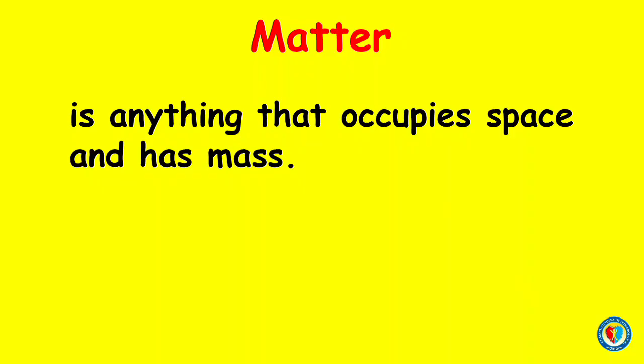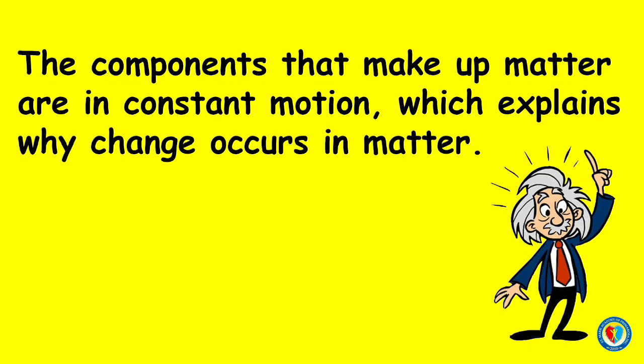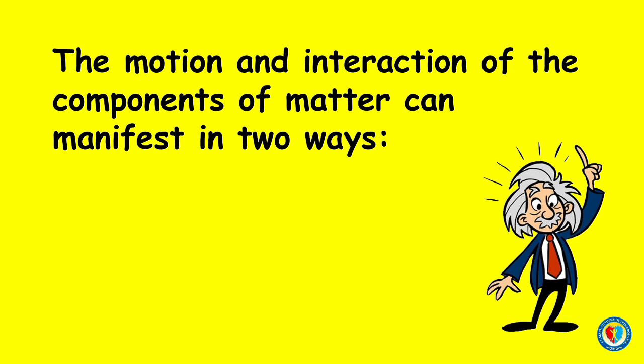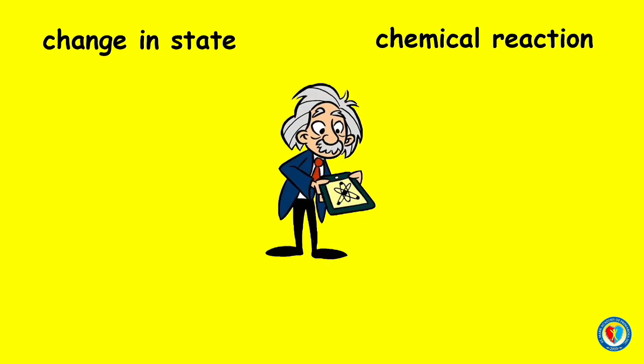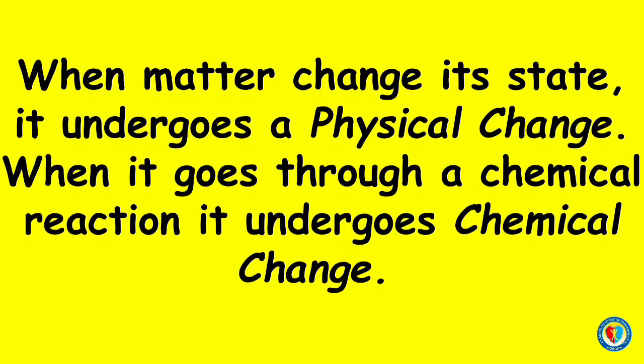We already know that matter is anything that occupies space and has mass. Everything goes through change. The components that make up matter are in constant motion, which explains why change occurs in matter. The motion and interaction of the components of matter can manifest in two ways: a change in state or a chemical reaction. When matter changes its state, it undergoes a physical change. When it goes through a chemical reaction, it undergoes chemical change.